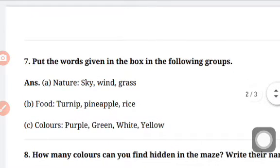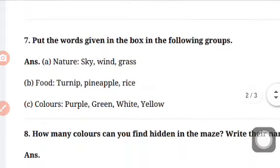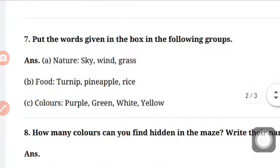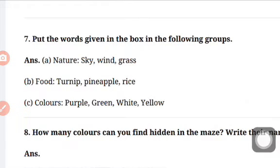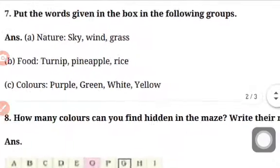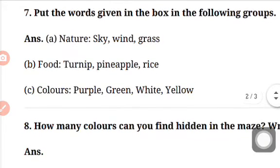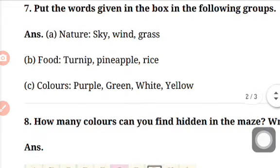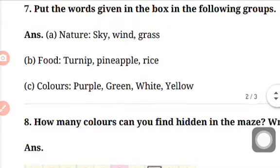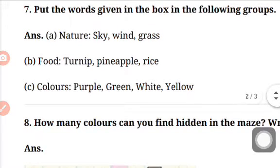Then put the words given in the box in the following groups. You have these groups: nature, food and colors. You have to write the words from the box inside them. So nature, what is in nature? Sky, wind, grass. Things that are naturally made, not made by humans. So sky, S-K-Y. Wind, W-I-N-D. And grass, G-R-A-S-S.